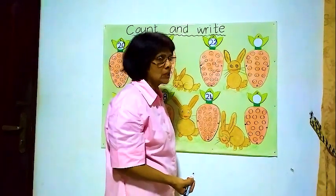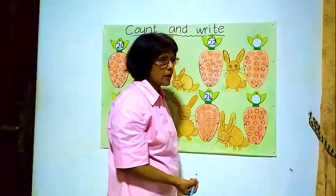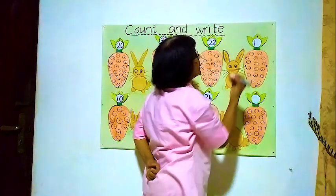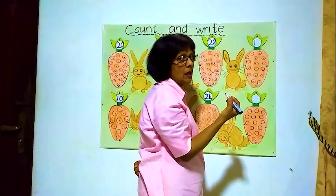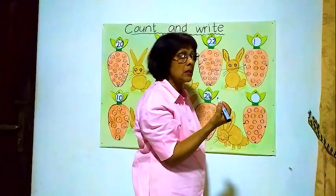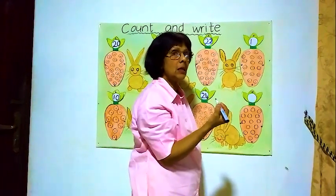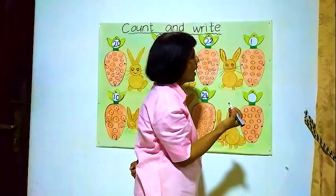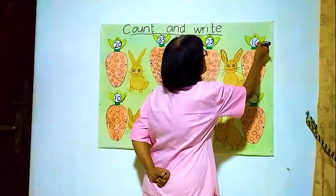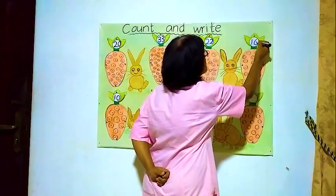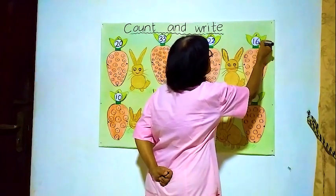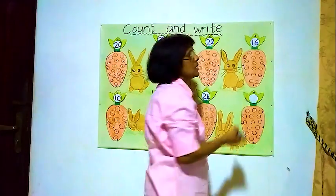Sixteen. How to write sixteen? One, seven is seventeen. One, eight is eighteen. We want to write one, six — sixteen. One and six is sixteen.